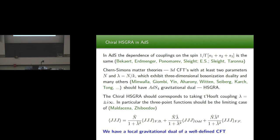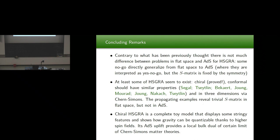Let me conclude. I tried to convince you that there is not much difference between flat space and ADS as far as interactions of higher spins are concerned. At least some higher spin gravities seem to exist — we considered the chiral case, and there are also conformal higher spin gravities studied by others. The chiral higher spin gravity in ADS seems to be a complete toy model that displays stringy features and interesting duality to Chern-Simons matter theories. Thank you very much.